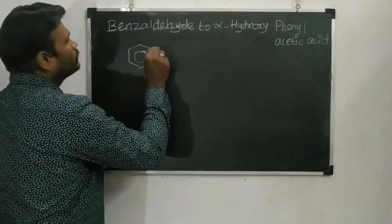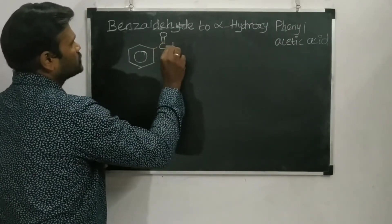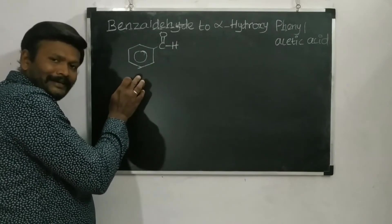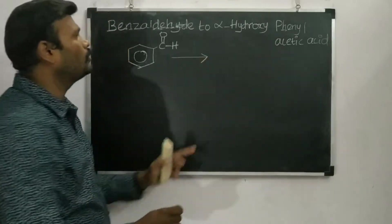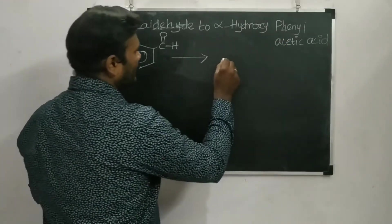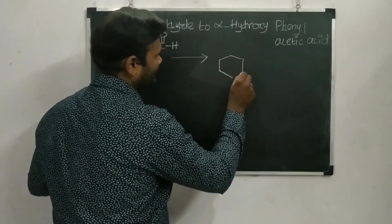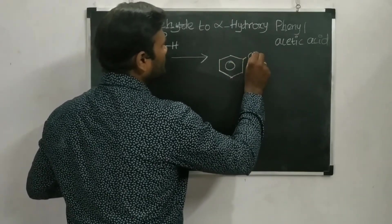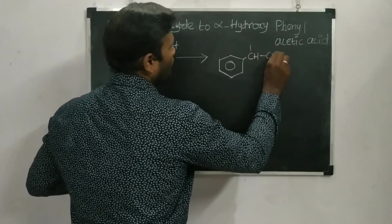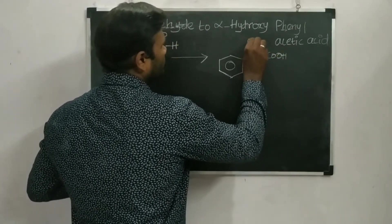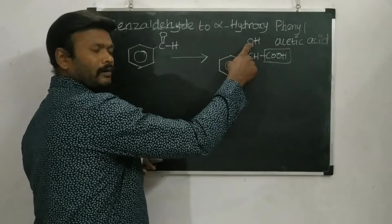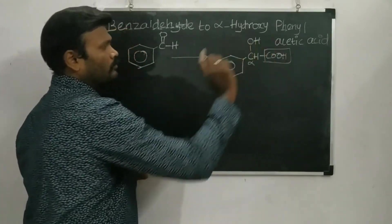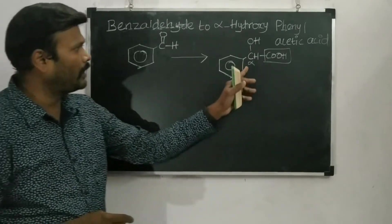We know the structure of benzaldehyde. Here it is — a C double bond O aldehyde group directly attached with benzene to form benzaldehyde. And this can be converted into alpha hydroxy phenyl acetic acid. That structure is: a phenyl group, then CH, then COOH, and OH on that carbon. This is the functional group and this is the alpha carbon.